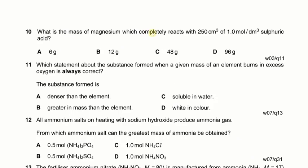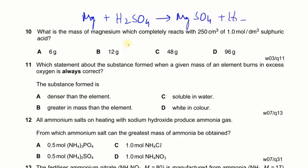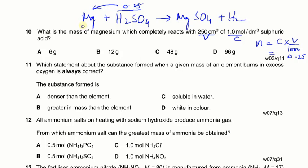Next: what mass of magnesium completely reacts with a given solution of sulfuric acid? First, construct the equation: Mg + H₂SO₄ → MgSO₄ + H₂. The moles of H₂SO₄ are found using moles = concentration × volume (in cm³ ÷ 1000), giving 0.25 moles. The mole ratio is 1:1, so we need 0.25 moles of Mg. The atomic mass of Mg is 24, so 0.25 × 24 = 6 grams.